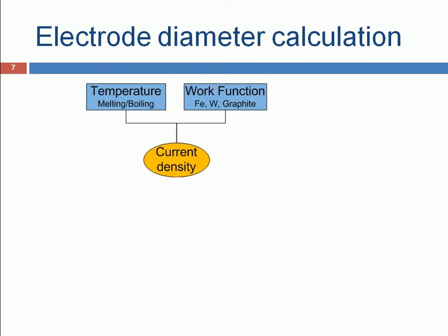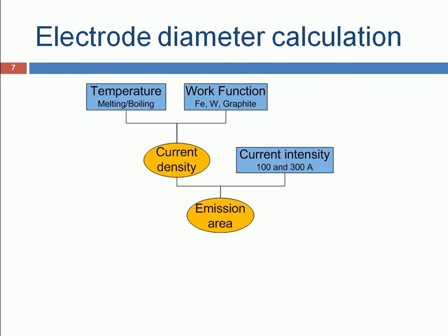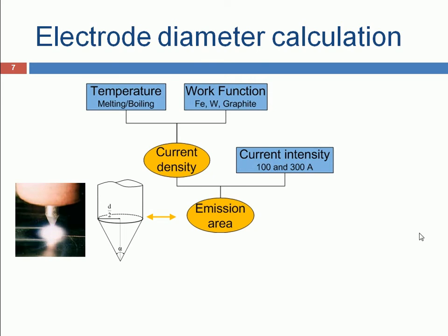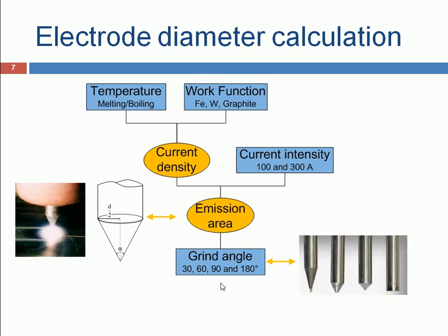For the electrode diameter calculation, first we calculated the current density by Richardson-Dushman equation as a function of temperature and work function. Then we calculated the emission area required to produce usual current intensities. We considered the emission area to be the complete surface of a cone at the tip of the electrode. Although we know that emission doesn't usually occur in all of the surface, it is a reasonable assumption because we are determining the minimum diameter to produce a given current intensity. We also calculated the diameter of the electrode as a function of the grind angle.